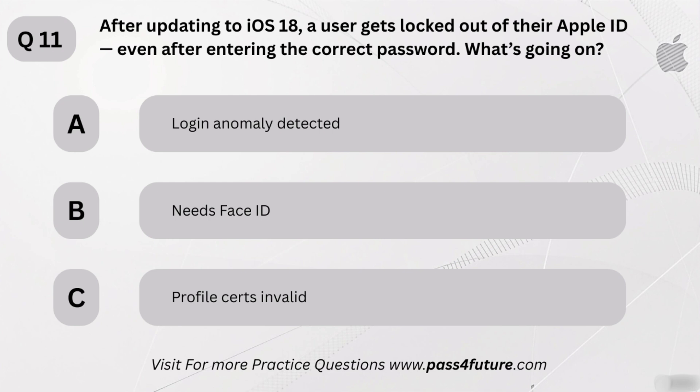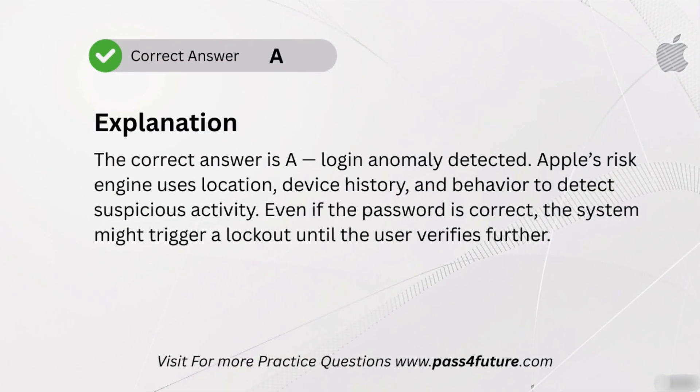After updating to iOS 18, a user gets locked out of their Apple ID even after entering the correct password. What's going on? A. Login anomaly detected. B. Needs Face ID. C. Profile certs invalid. The correct answer is A — login anomaly detected. Apple's risk engine uses location, device history, and behavior to detect suspicious activity. Even if the password is correct, the system might trigger a lockout until the user verifies further.